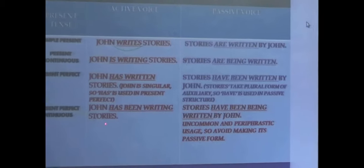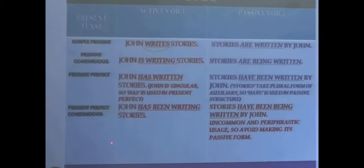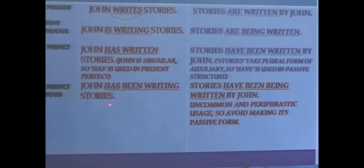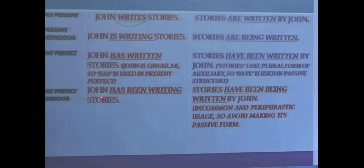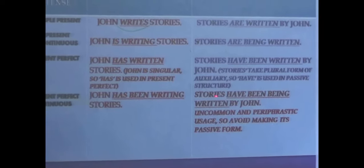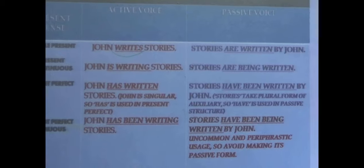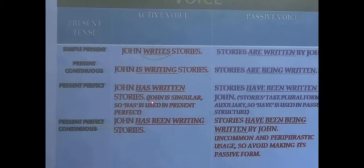Present perfect continuous: 'John has been writing stories.' The passive would be 'stories have been being written by John' — but this is uncommon and periphrastic. We prefer the active voice for this form. So only three present tense passive forms are important. Similarly, now we talk about past.